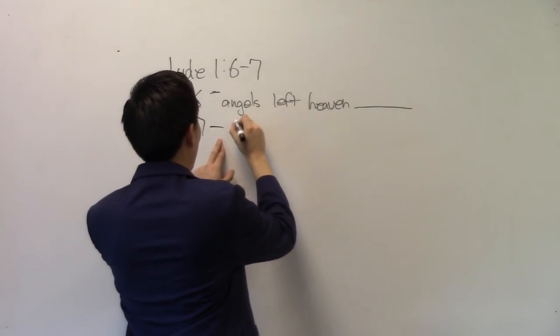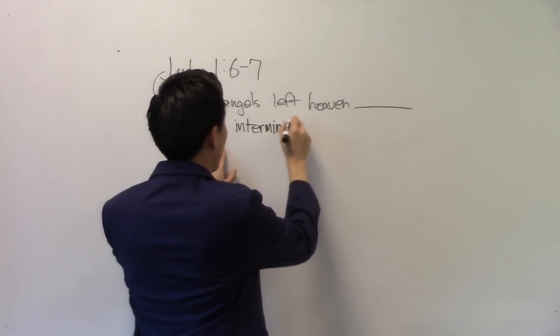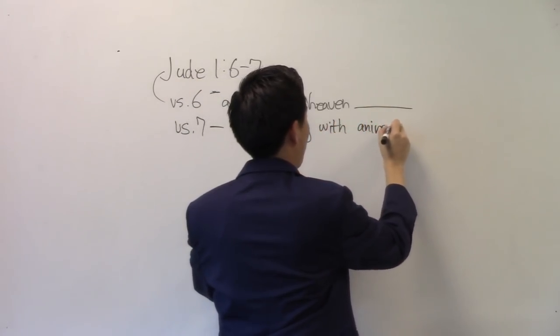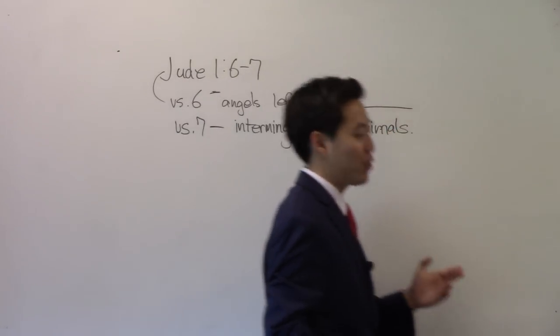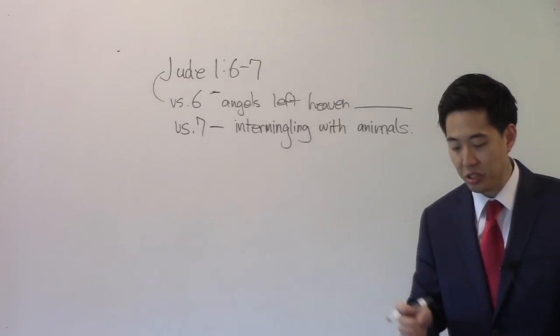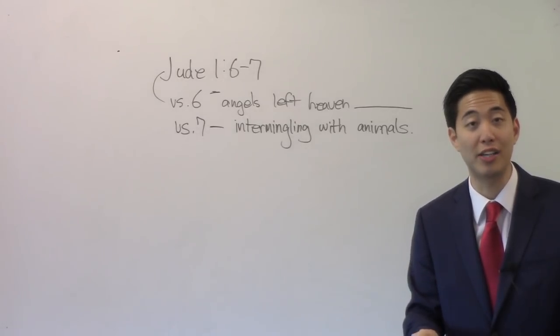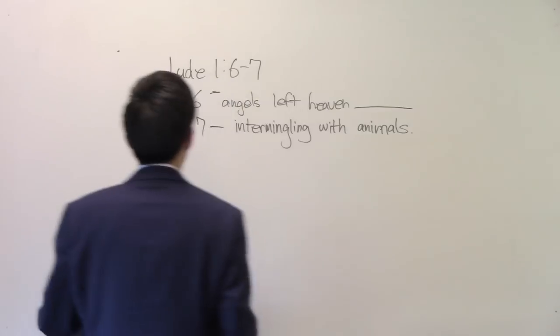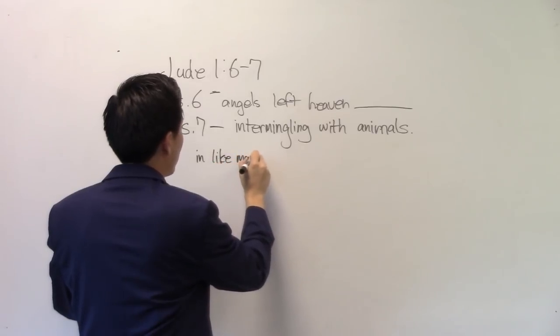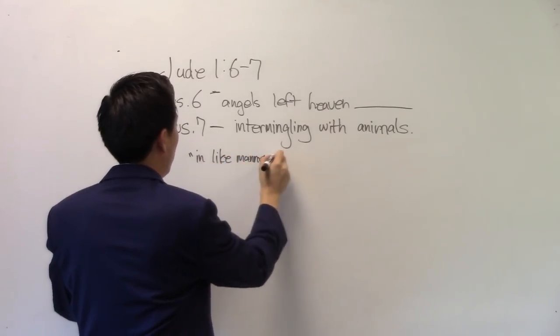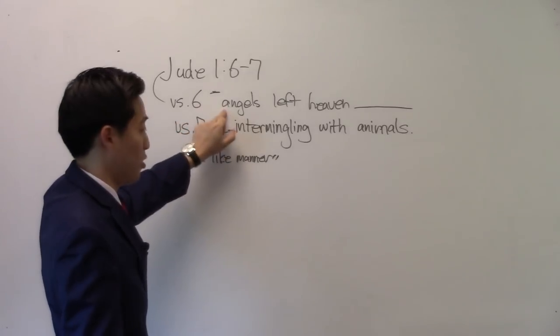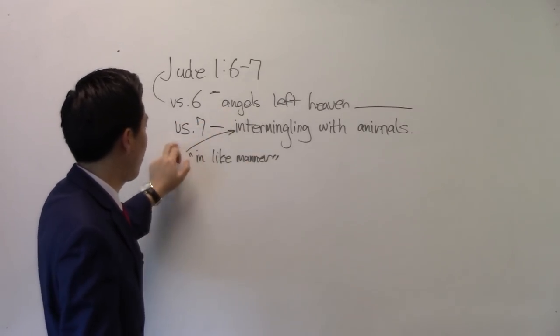It's sexual perversion, intermingling marriage with animals. First of all, verse 6 talked about the angels. Now look at verse 7. The first two words: even as. So verse 7 is showing in like manner, following the same example. Verse 6 and verse 7 show they're copying each other. The angels left heaven and did something.